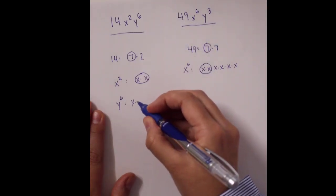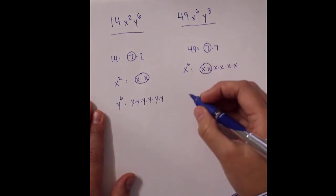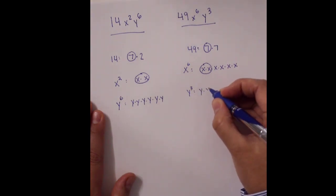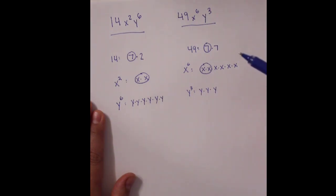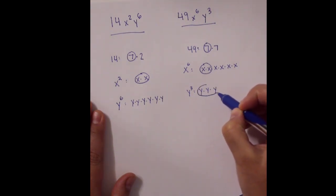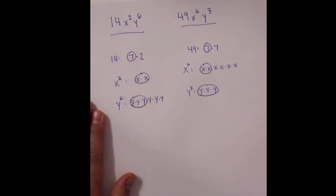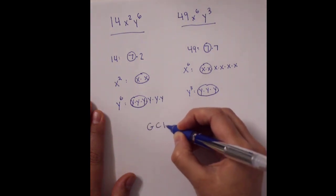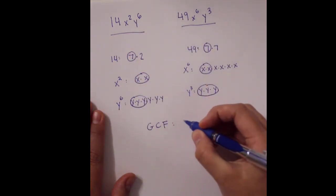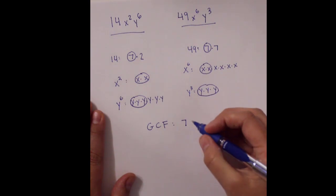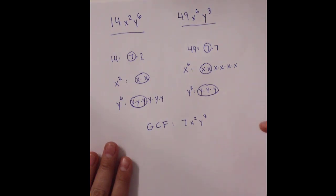The first expression has six y's and the second expression has three y's. The greatest common factor for the y's is three — this expression had three y's and the other has at least three y's. Putting this all together, the greatest common factor of these two expressions is 7x²y³.